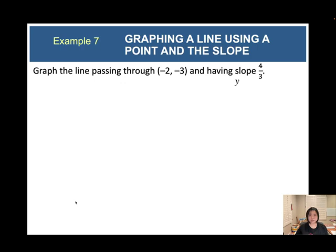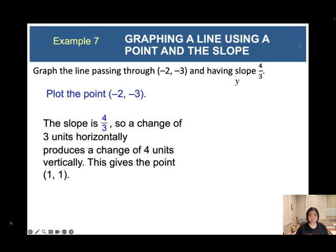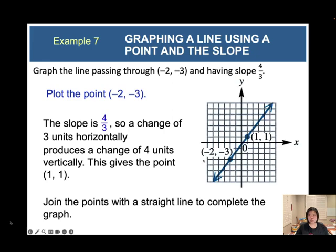Graph the line passing through the point (negative 2, negative 3) with slope 4 over 3. Place the point (negative 2, negative 3) on the graph. A slope of 4 over 3 means rise 4 units and run 3 units. Go up 4 units and right 3 units to get the next point at (1, 1). Join these two points to form the linear equation.